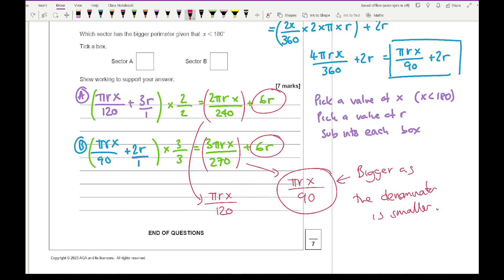Therefore, this fraction is always going to give me, if x and r are the same values in both fractions, this fraction here is always going to be bigger because I'm dividing by a smaller number. So long story short, sector B is going to be the bigger of the perimeters.